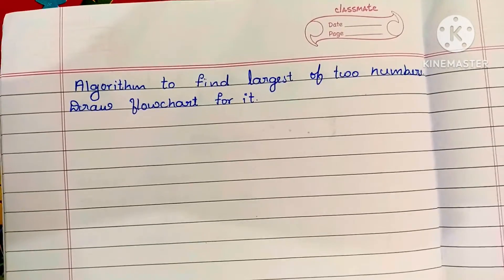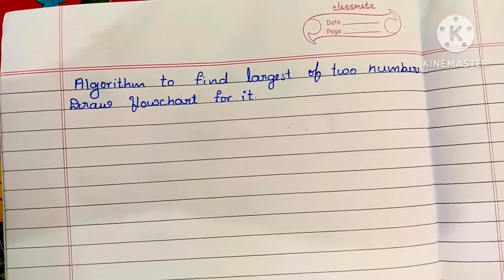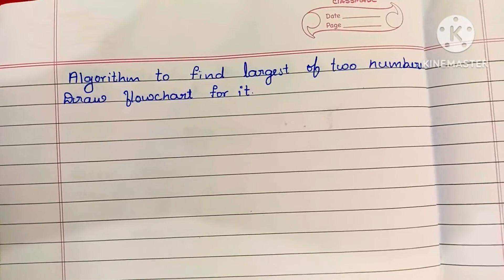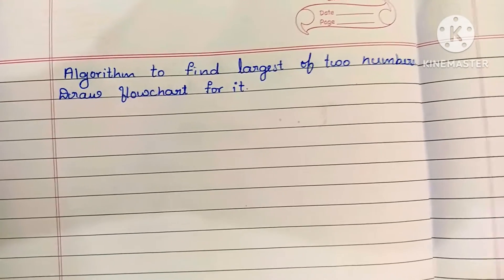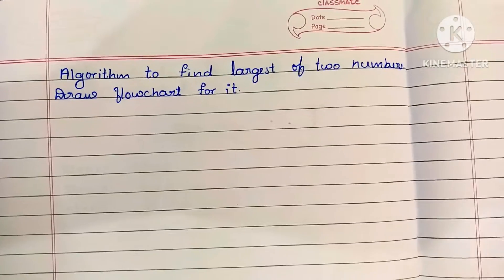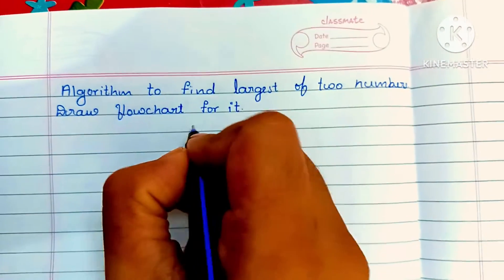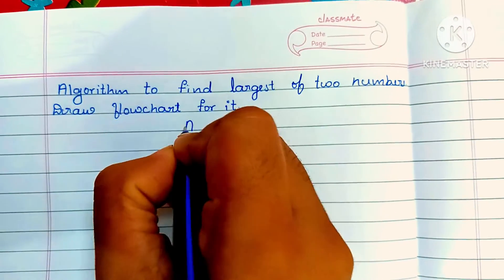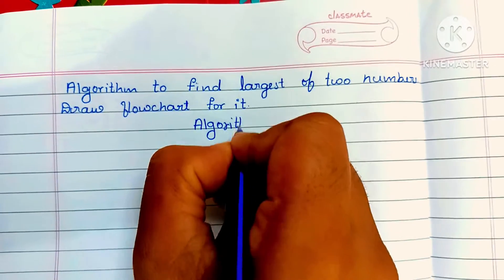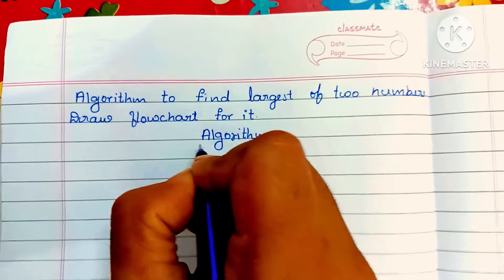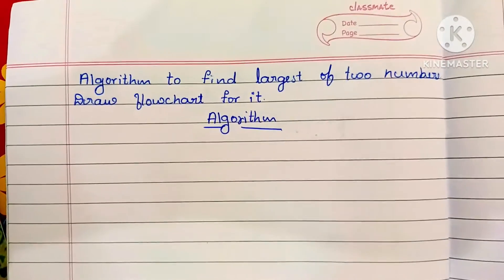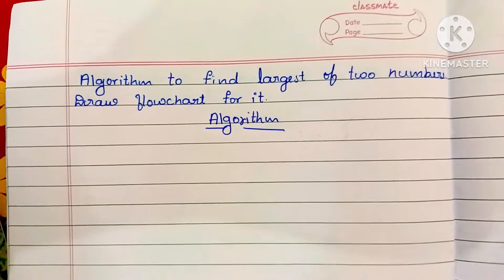Hi guys, in this video we're going to learn how to write an algorithm to find the largest of two numbers and draw a flowchart for it. First we have to write the algorithm. Algorithm is a step-by-step process to solve a problem.